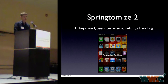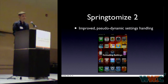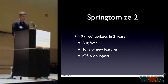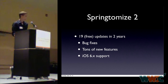Sprintomize 2 also had pseudo-dynamic settings handling, meaning you could go into the settings app or the Sprintomize application, change different things, and then apply them using a reload button. That would trigger a reload inside Springboard, resetting its internal state to show updated changes. This was a step forward from the first version, where you had to respring to apply any modification, even the smallest one. Sprintomize 2 had 19 updates over two years, including bug fixes, new features, user-requested additions, and support for iOS 7 with the first jailbreak released for it.